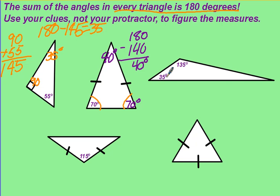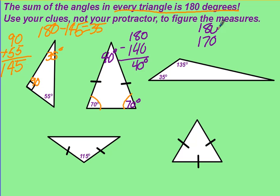This is a scalene triangle. None of the sides match, and none of the angles will match. Take the angles that you already know, and you have 170 degrees. Subtract that from 180, so we know that the missing angle has to be 10 degrees.